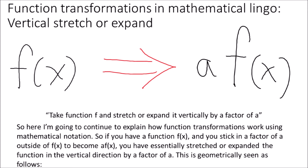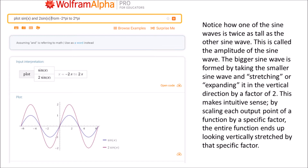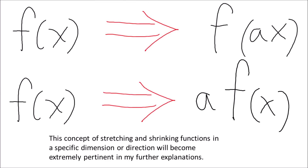If you have a function f(x) and you multiply outside to become a·f(x), you have essentially stretched or expanded the function in the vertical direction by a factor of a. Here we have a picture stretched or expanded vertically by a factor of 2. Notice how the area is now doubled after this transformation. This can also be seen with a sinusoidal sine wave — one sine wave is twice as tall as the other, which is called the amplitude. The concept of stretching and shrinking functions in a specific dimension will become extremely pertinent in further explanations.